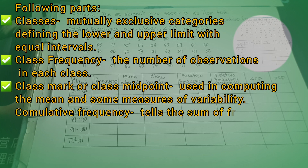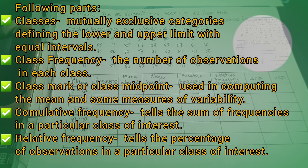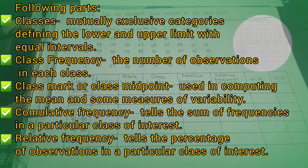It has the following parts: Classes are mutually exclusive categories defining the lower limit and the upper limit with equal intervals. Class frequency is the number of observations in each class. The class mark or class midpoint is used in computing the mean and sum measures of variability. Cumulative frequency tells the sum of frequencies in a particular class of interest. Relative frequency tells the percentage of observations in a particular class of interest.